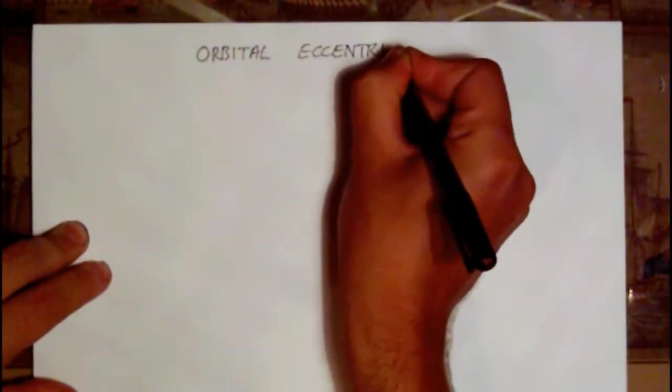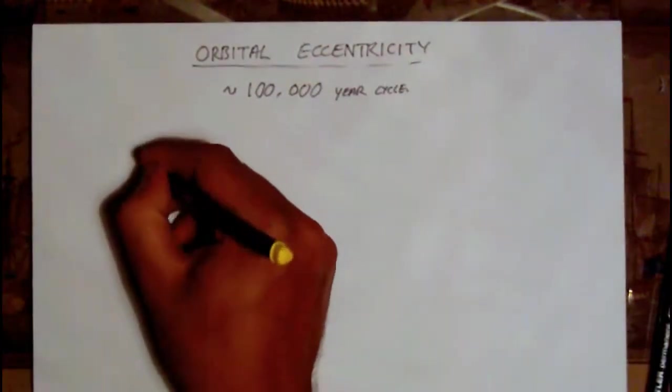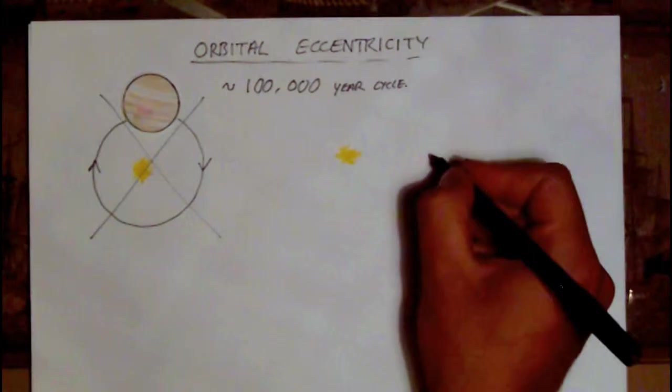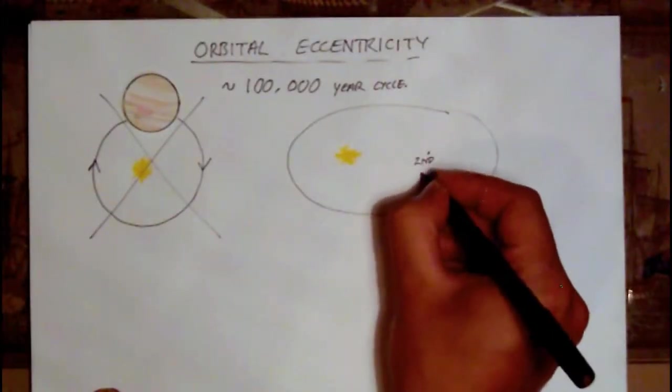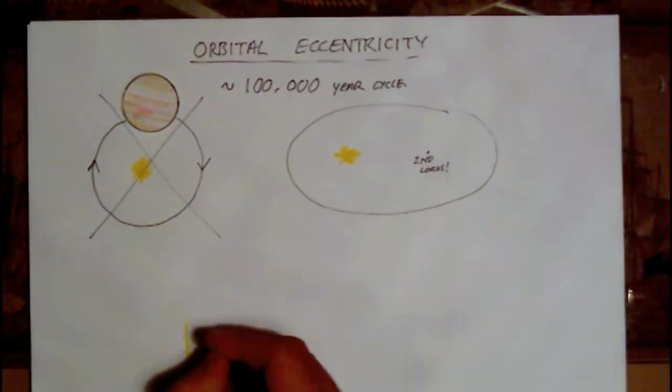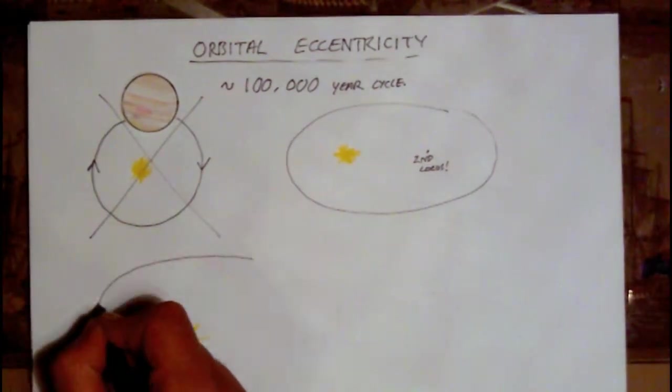The longest of these cycles, orbital eccentricity, lasts for around 100,000 years and describes the change of the shape of the Earth's orbit around the Sun. Planetary orbits are not circular but are in fact elliptical, with the Sun occupying one of the ellipse's two foci.